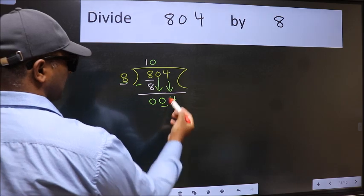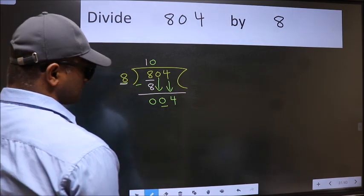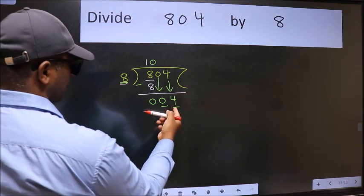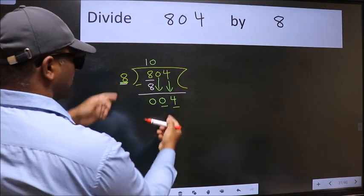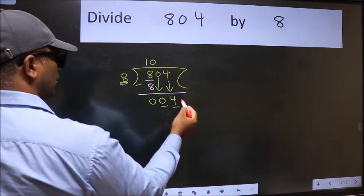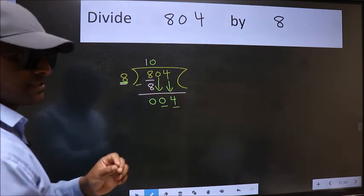After this step, the mistake happens. And the mistake is this: here we have 4 and here 8. 4 is smaller than 8. So what many do is they directly put the decimal point and take 0, which is wrong.